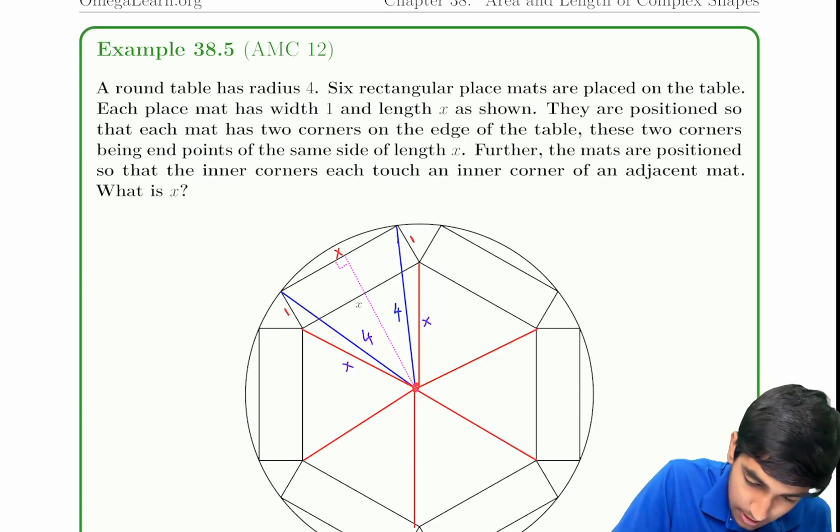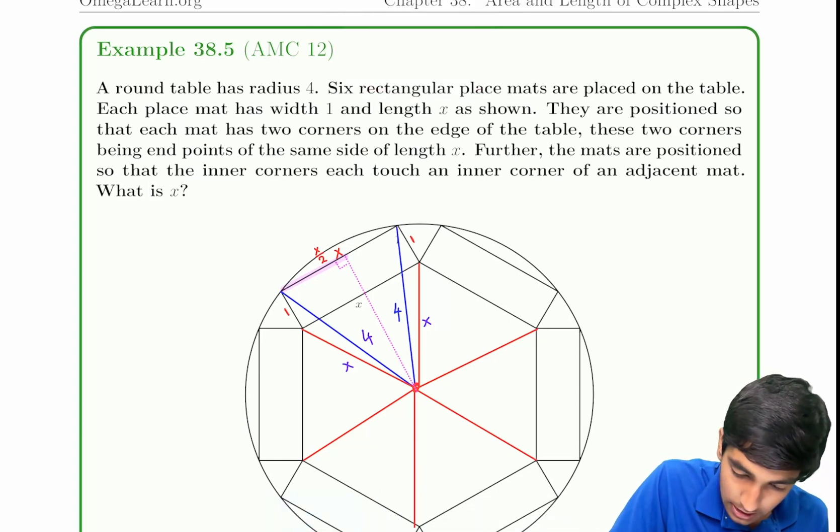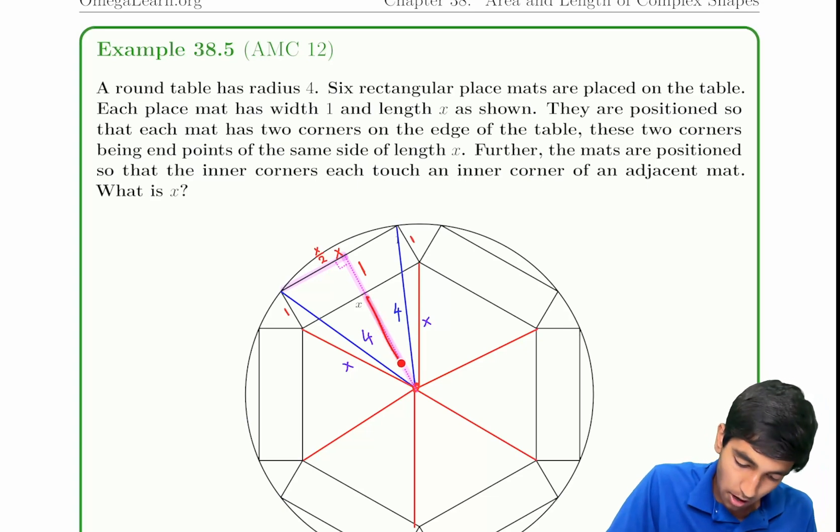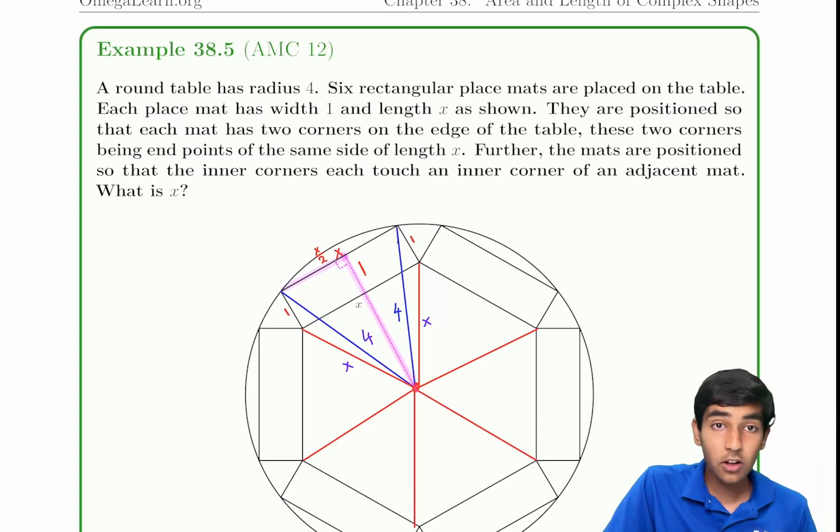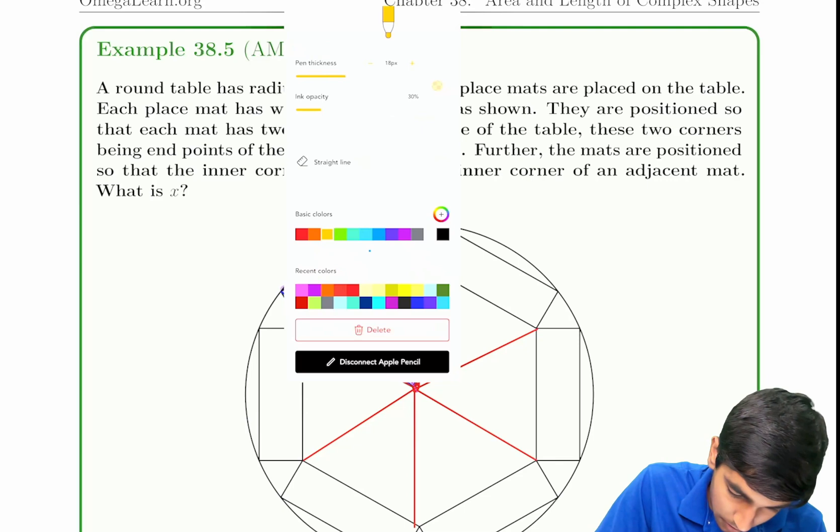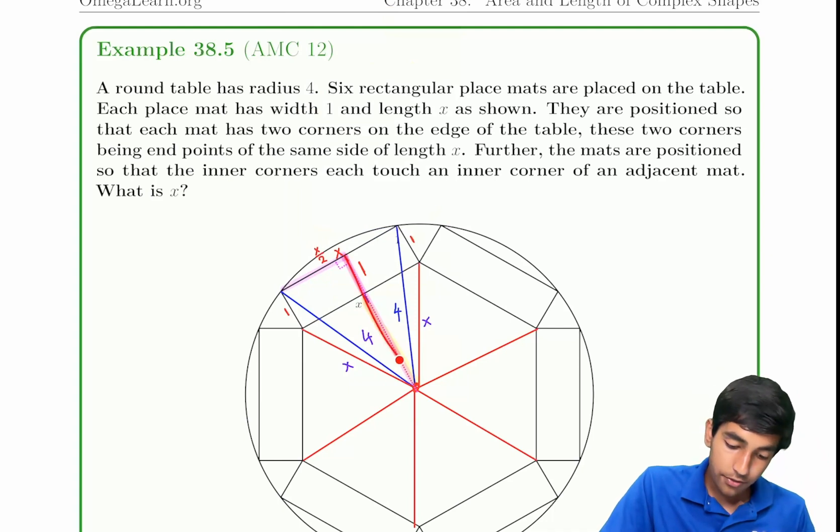When we drop the altitude, we can use Pythagorean theorem based on the height. This thing over here is x over 2. This length over here is 1 plus whatever this part is. This part is just 1, because rectangle. And this part, it's an equilateral triangle. The height of an equilateral triangle with side length x is root 3 over 2x. So in total, this length is root 3 over 2x plus 1.